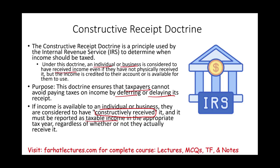For example, let's assume you received a check in the mail on December 31st but you did not pick it up until January 15th because you went on vacation. Guess what? You did receive it. You had access to it on December 31st but just chose not to get it. It is income to you for that year.